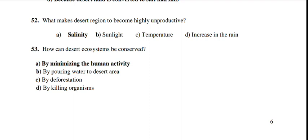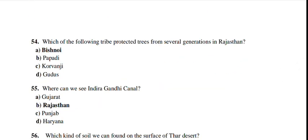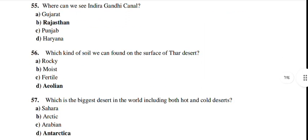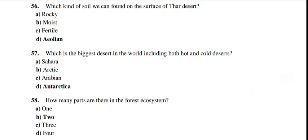What makes a desert region highly unproductive? Salinity. How can a desert ecosystem be conserved? By minimizing human activity. Which tribe protected trees for several generations in Rajasthan? The Bishnoi. Where can we see the Indira Gandhi Canal? In Rajasthan. Which kind of soil is found on the surface of the Thar Desert? Aelian soil.